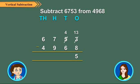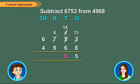Subtracting the 10's. Here, 6 is greater than 4. So, from the 100's column we borrow 1 hundred, leaving behind 6 100's. Now, 100 plus 4 10's is equal to 10 10's plus 4 10's, which is equal to 14 10's. 14 10's minus 6 10's is equal to 8 10's.